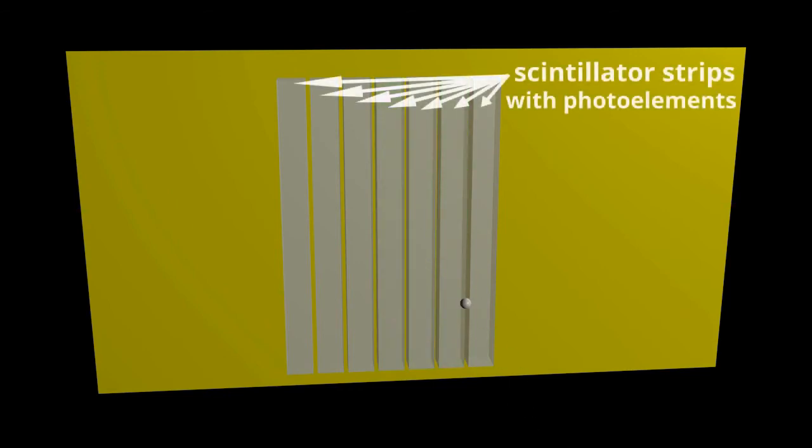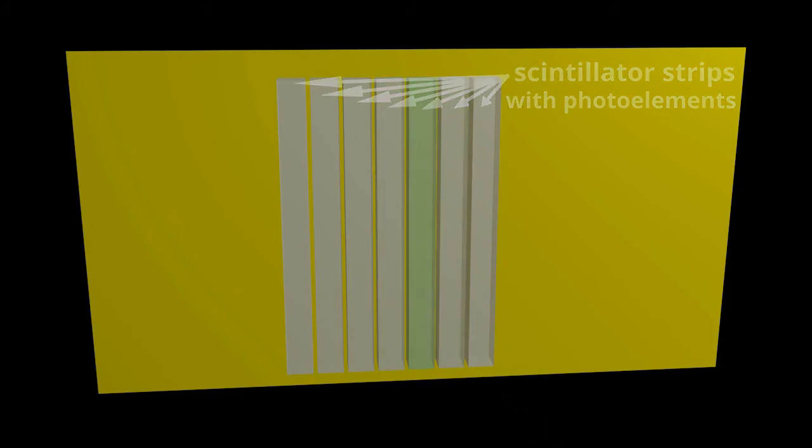Then the coordinate of a passing particle is equal to the coordinate of a flashing strip, up to the width of this strip. The more narrow the strip, the more accurate the result.